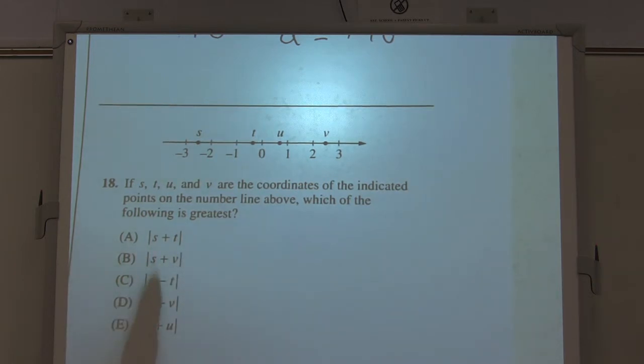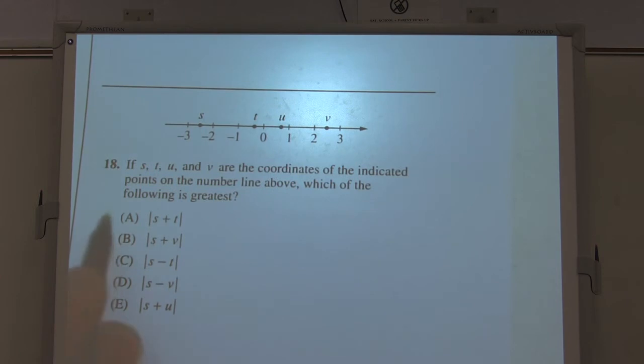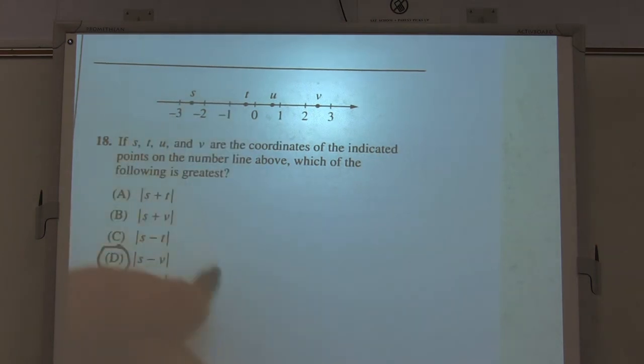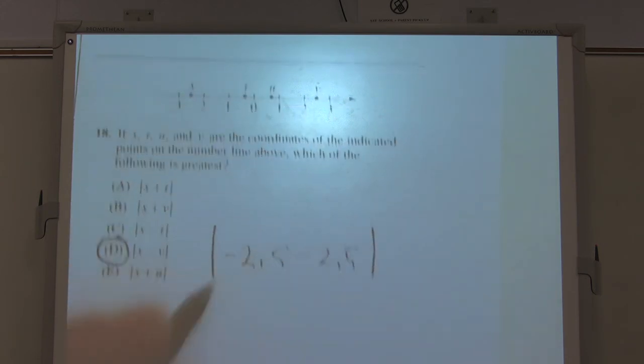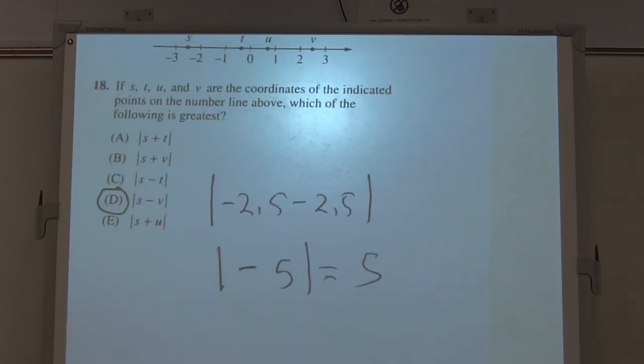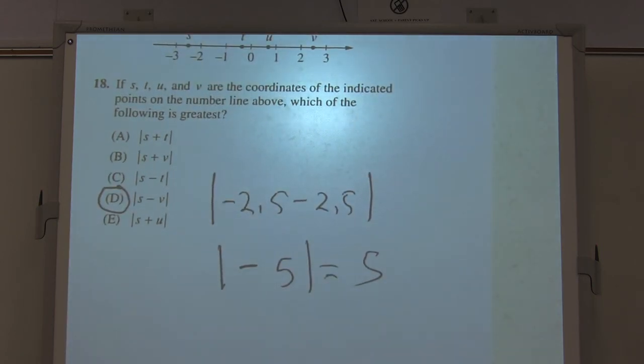How about S minus T? Negative 2.5 minus, I don't know, whatever that is. I'll call it 0.5, I suppose. That's not it. I think it's this one right here, because I get negative 2.5. If I subtract off negative 2.5 minus V over here, which is a positive 2.5, and when I subtract that, that gives me a negative 5, and the absolute value of negative 5 is 5, and that's the biggest value I'm going to get is that one right there.